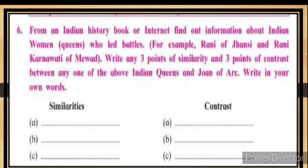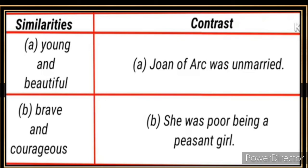Sixth question: From an Indian history book or internet, find out information about Indian women queens who led battles — for example, Rani of Jhansi and Rani Karnawati of Mewar. Write any three points of similarity and three points of contrast between any one of the above queens and Joan of Arc in your own words.